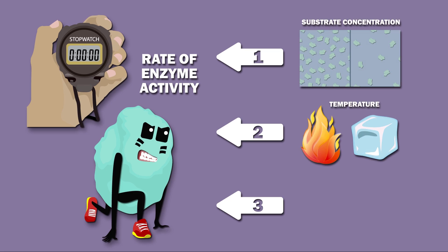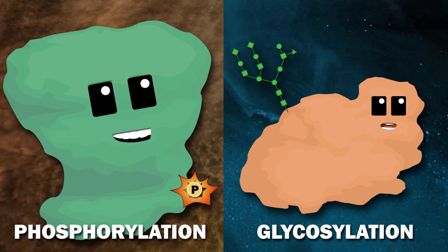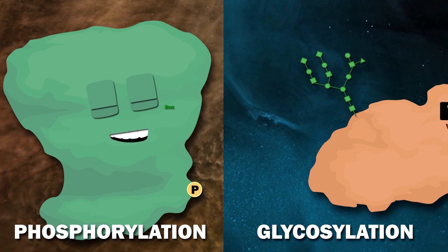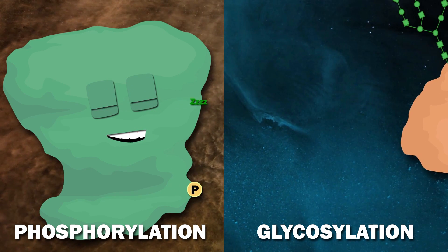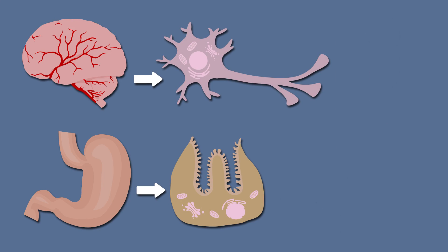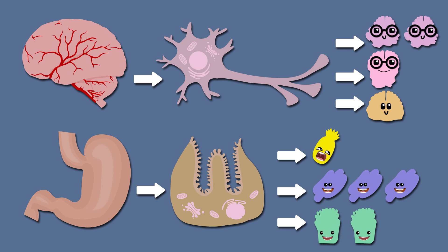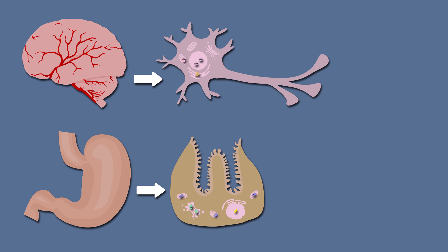Substrate concentration, temperature, and pH are not the only factors affecting enzyme activity. Cells also have some control over enzymatic activity. For example, they can assert control through the use of post-translational mechanisms such as phosphorylation and glycosylation, each of which can increase or decrease enzymatic activity. In addition, cells in different organs produce different enzymes, and each cell has control over how much of each enzyme it produces, as well as which enzymes go to which organelles. For example, digestive enzymes are found in the stomach, but not in the brain.